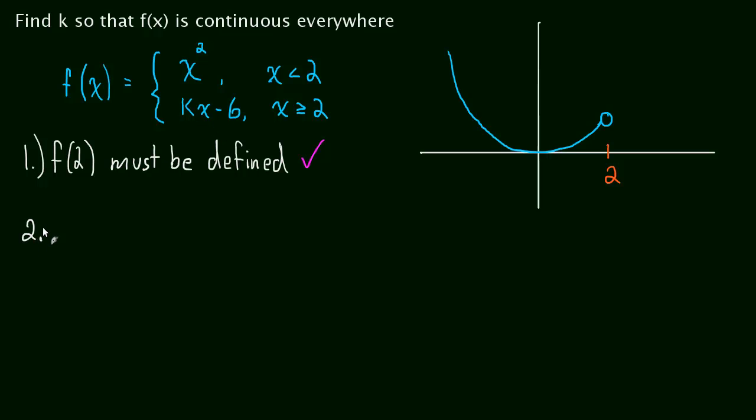The second condition is the limit as x approaches 2 must exist. And this is going to be the bulk of our work. So, we're going to break this up into two separate limits. The limit as x approaches 2 from the left-hand side. And when we're coming from the left, the function is x squared. So, that's the function that we're going to use for this limit.